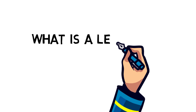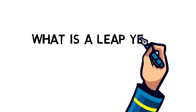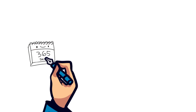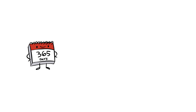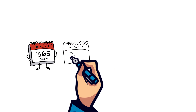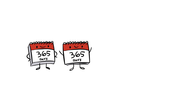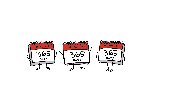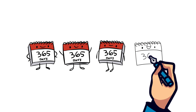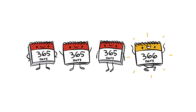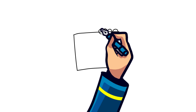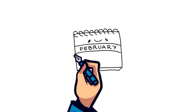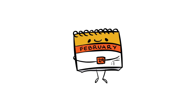Let's answer the question: what is a leap year? In a standard year there are 365 days, but typically every four years something different happens and we have another day added. A leap year is when we have 366 days rather than 365. This additional day is added into the shortest month of the year, which is February, giving the month 29 days instead of its usual 28.